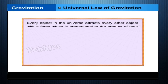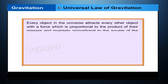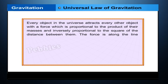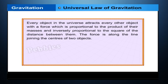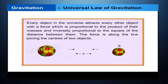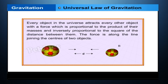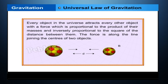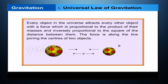Every object in the universe attracts every other object with a force which is proportional to the product of their masses and inversely proportional to the square of the distance between them. The force is along the line joining the centers of the two objects. Let two objects A and B of masses M and m lie at a distance d from each other, as shown in figure. Let the force of attraction between two objects be F.